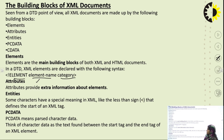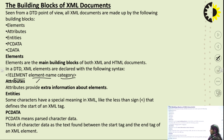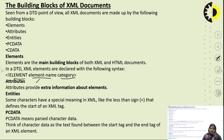PCDATA — Parsed Character Data — is the text found between the start and end tags of an XML element, and that particular text can be further parsed.